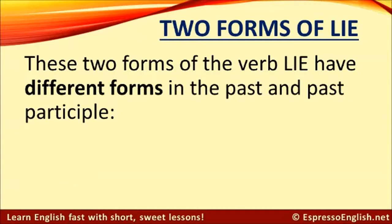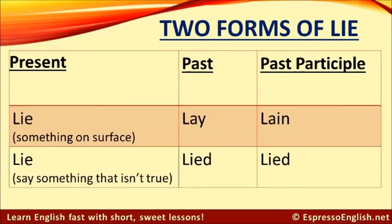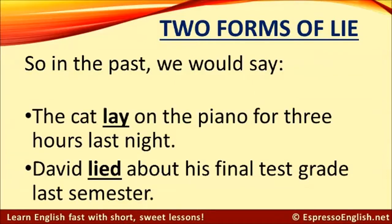These two forms of the verb lie have different forms in the past and past participle. For lie meaning something resting on a surface, the past is lay and the past participle is lain. But for lie meaning to say something that isn't true, the past is lied, and the past participle is also lied. So in the past, we would say: The cat lay on the piano for three hours last night. David lied about his final test grade last semester.